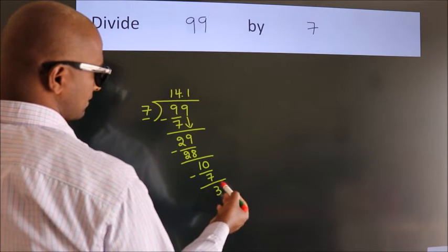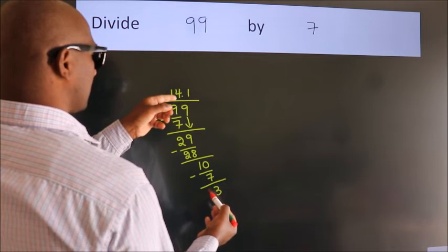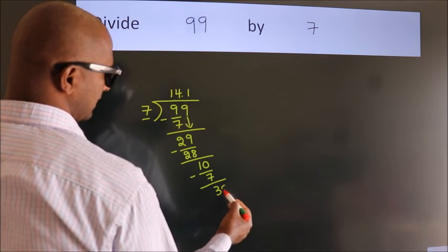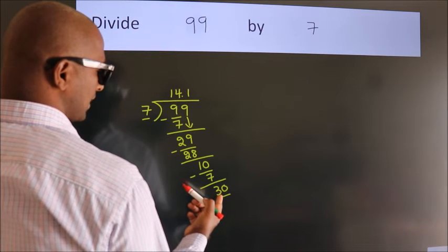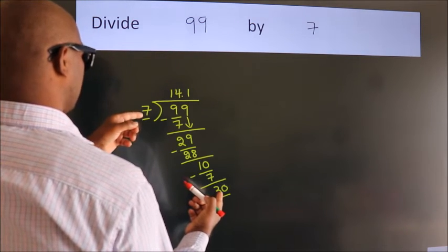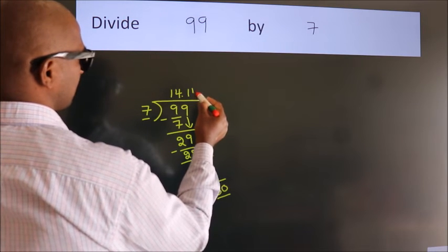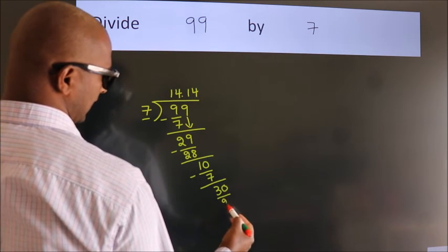After this, we already have the decimal, so we directly take 0. So we have 30. A number close to 30 in the 7 table is 7 fours, which is 28.